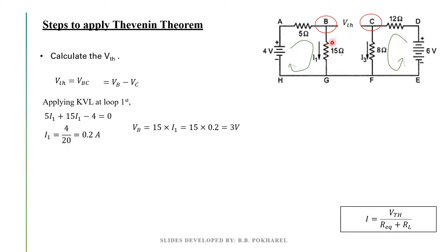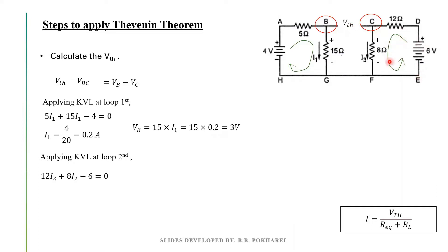Now, I1 means this is what we call Vb, simply Vb, and the current flow through 15 ohm means this is the multiplication for Vb. So, 15 into I1 means Vb equals 15 into 0.2, and Vb means this is what we call 3V. Now in this way, if we call the second loop, we call KVL in the second loop. Then, we call the equation 12 into I2. Here, we call I3 and I2. This is the current flow. The current flow is 12 into I2 or I3. So, 12 into I2 plus 8 into I2 equals to simply 6.